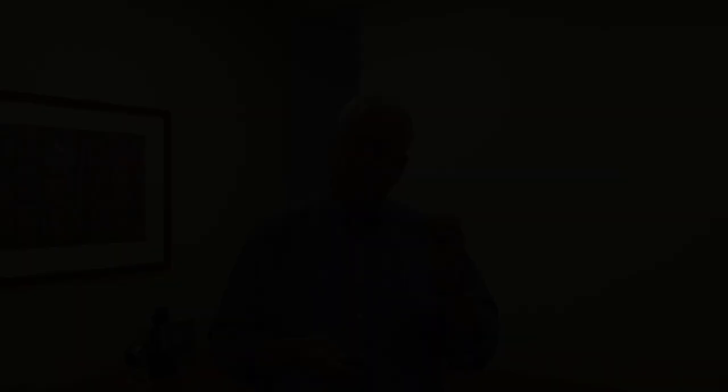This is not a complex framework, but that doesn't mean it's not challenging to execute. Looking at Salesforce, Microsoft, and other tech companies, one key lesson is that accountability is critical — every row and every column must have a unique owner responsible not just for the total at the end of that row or column, but for all the intermediate numbers in the cells. We call this cell-level accountability. Many companies have strong column accountability, but cell-level accountability often gets lost.